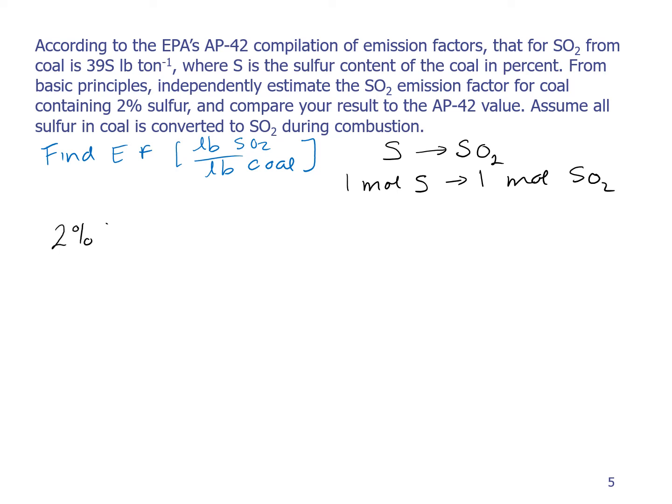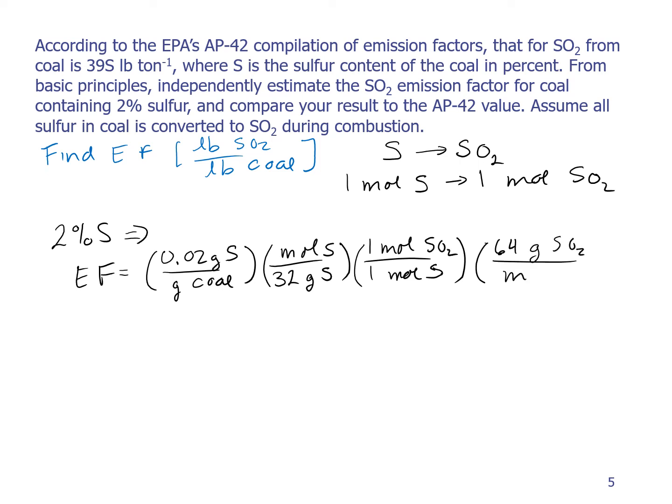So if I start with 2% sulfur, I can use that to get my emission factor. My emission factor, I'm going to do a bunch of unit conversions. 2% sulfur in coal means I have 0.02 grams of sulfur per gram of coal. Now I'm going to go to moles because I know that the sulfur goes one to one to SO2. So I can divide by the atomic weight of sulfur, which is 32 grams of sulfur per mole of sulfur. And now I can apply this stoichiometric ratio, which is that one mole of sulfur gives me one mole of SO2. Finally, I want to get to mass of SO2, so I multiply by the molecular weight of SO2, which is 64 grams of SO2 per mole of SO2.